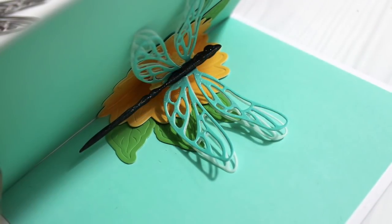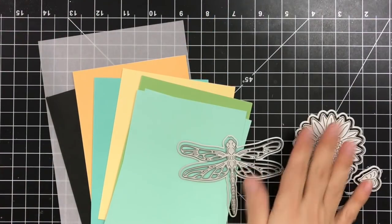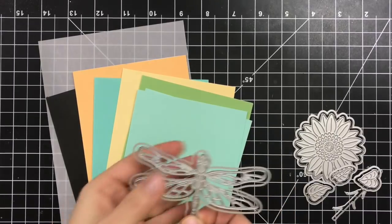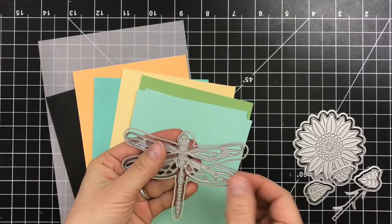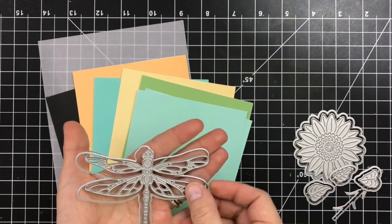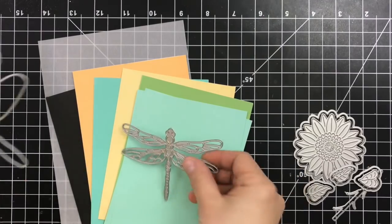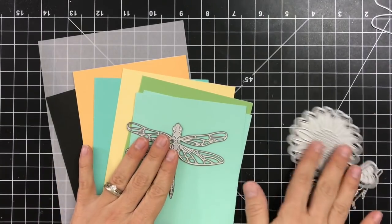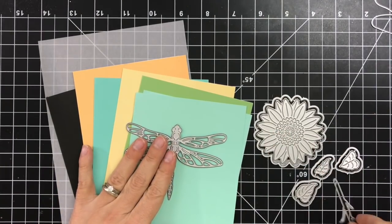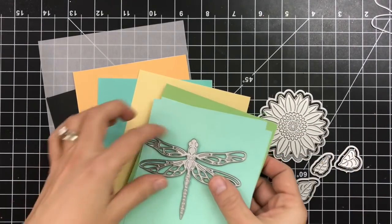I'll be working with two dies. You can work with any dies you want. You can transform pretty much any die into a pop-up. I'm using the Dragonfly Fancy Die. I won't be using the frame, I'll just use the intricate die cut along with the sunflower paper layering die. I'll use only the flower and the leaves without the stem.